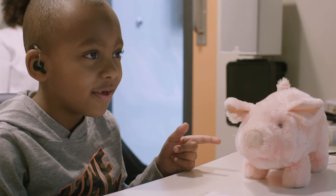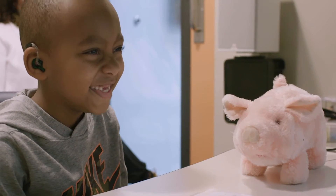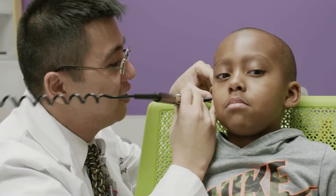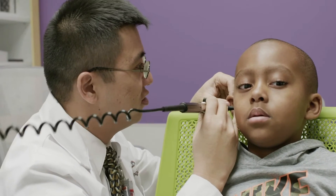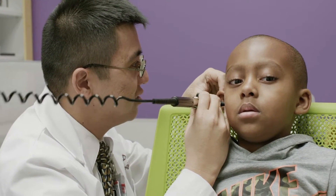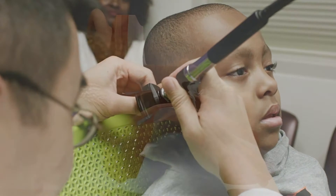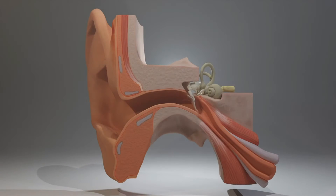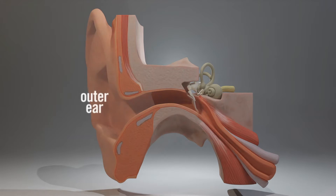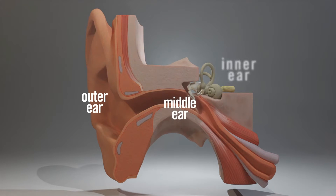You might be asking how this happened. Hearing loss happens when there's a problem with one or more parts of the ear. Let's find out what goes wrong and how doctors can help. There are three parts to the ear: the outer ear, the middle ear, and the inner ear.